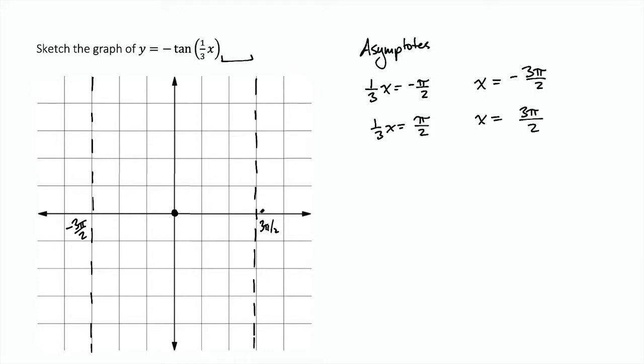Then halfway between that point and the asymptote to the right, we're going to have another point. And it's going to be the y-coordinate we get by simply moving whatever the number is in front of the tangent, which in this case is negative 1. So we're going to move negative 1, we're going to come down 1, and that's going to be our next point.